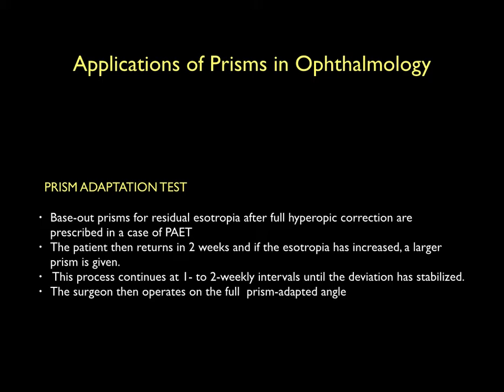The prism adaptation test helps to calculate the amount on which a surgeon would decide to operate upon in a case of partially accommodative esotropia. A base-out prism is prescribed over a full hyperopic correction and the patient is reviewed at every 2-week interval. The amount of residual esotropia is measured and prism power is increased further until the angle of deviation is stabilized. This final angle is what the surgeon needs to operate upon.